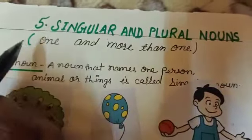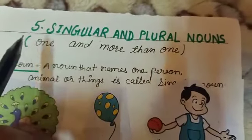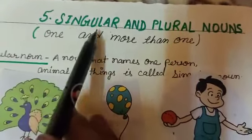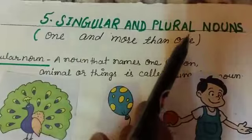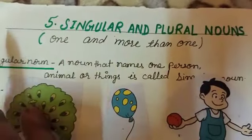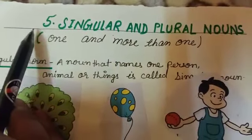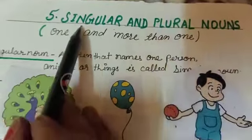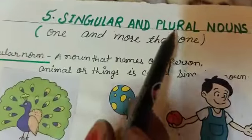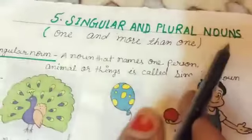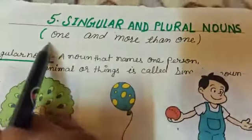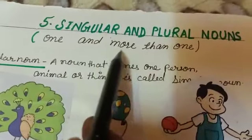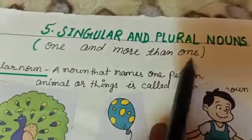Good morning children, how are you? I hope you all are well and safe at home. Now continue with your studies. Chapter number 5: Singular and Plural Nouns — One and more than one.